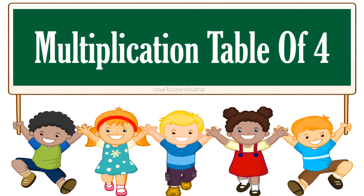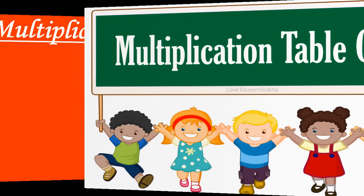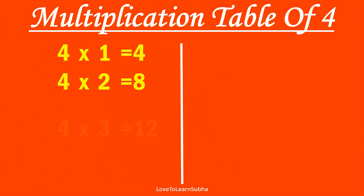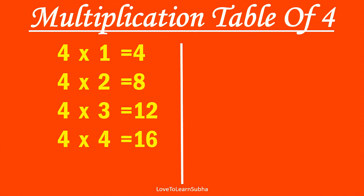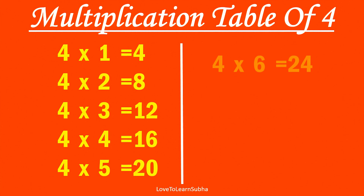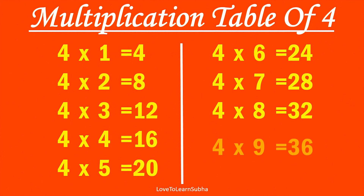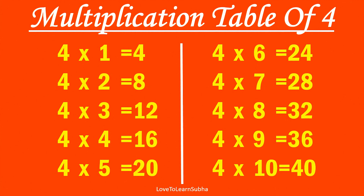Multiplication table of 4. 4×1 is 4, 4×2 is 8, 4×3 is 12, 4×4 is 16, 4×5 is 20, 4×6 is 24, 4×7 is 28, 4×8 is 32, 4×9 is 36, 4×10 is 40.